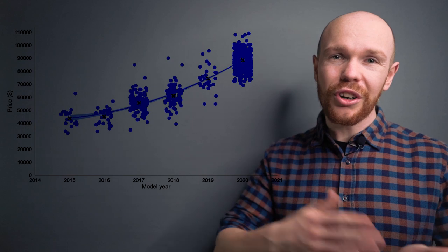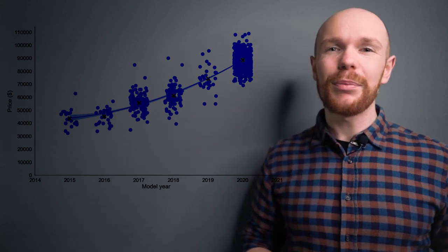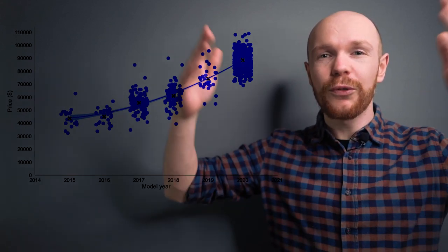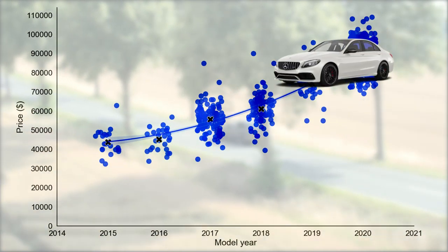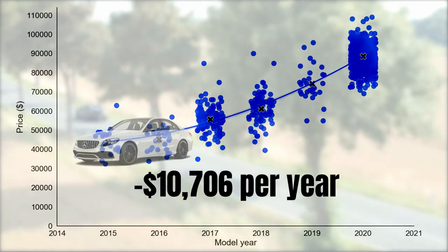You can also see that all the cars now have the same colors and that's because the depreciation curve goes for the full market. Now if you have a look at the graph we can see that the average depreciation per year is $10,706.